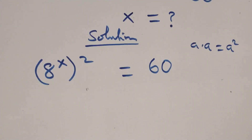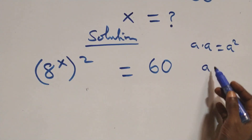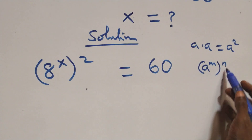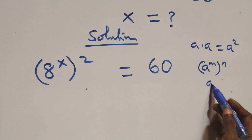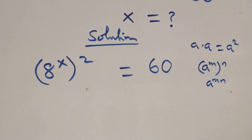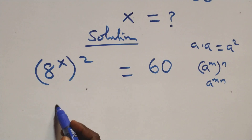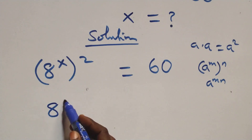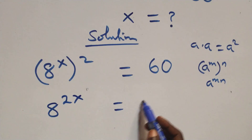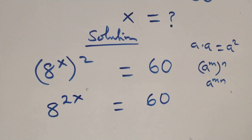The next step here, this follows: one we have a raised to power m, or raised to power m. This is the same thing as a raised to power m plus m. At this, this power multiplies and we have a raised to power 2x equals to 60 on this side.